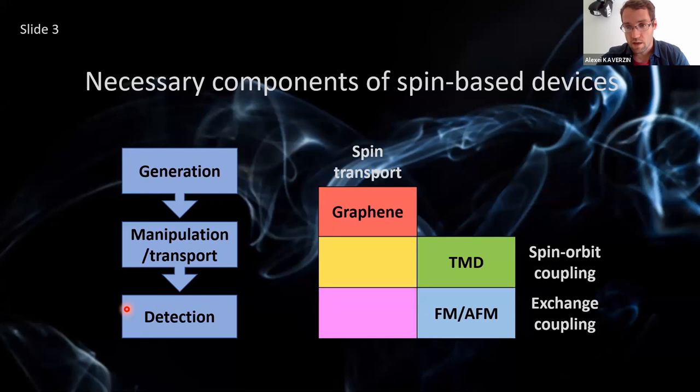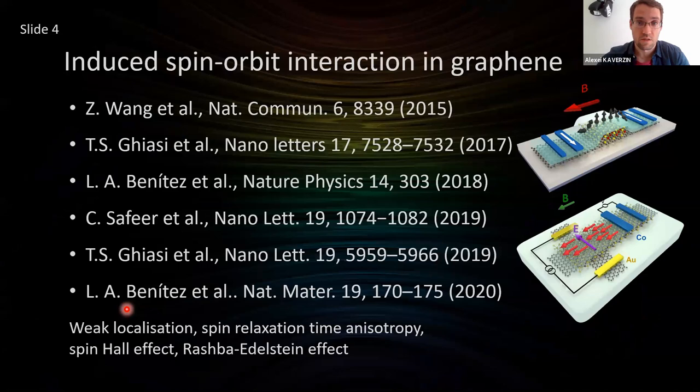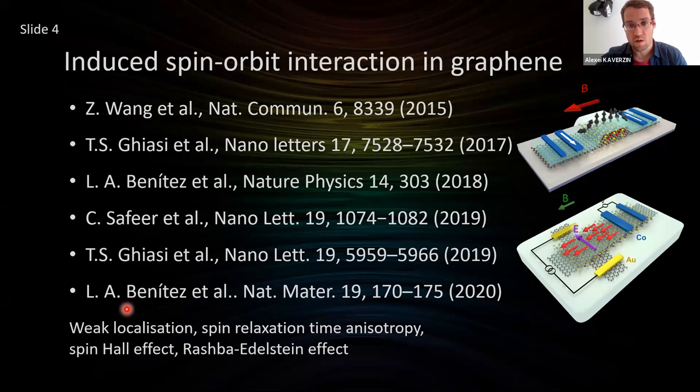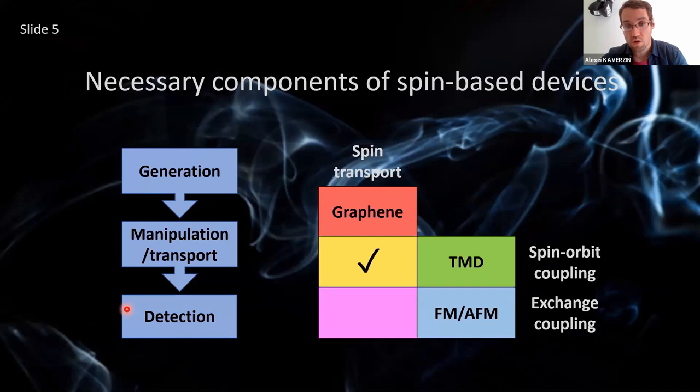The area of TMDs was covered in the previous talk, but I will mention the main experimental works where people have shown that in heterostructures of layered materials — TMD and graphene — it's relatively easy to observe effects like spin relaxation anisotropy, spin Hall effect, and the Rashba-Edelstein effect. We also contributed with our papers in this field. As a community, we managed to experimentally demonstrate that we can induce spin-orbit coupling in graphene.